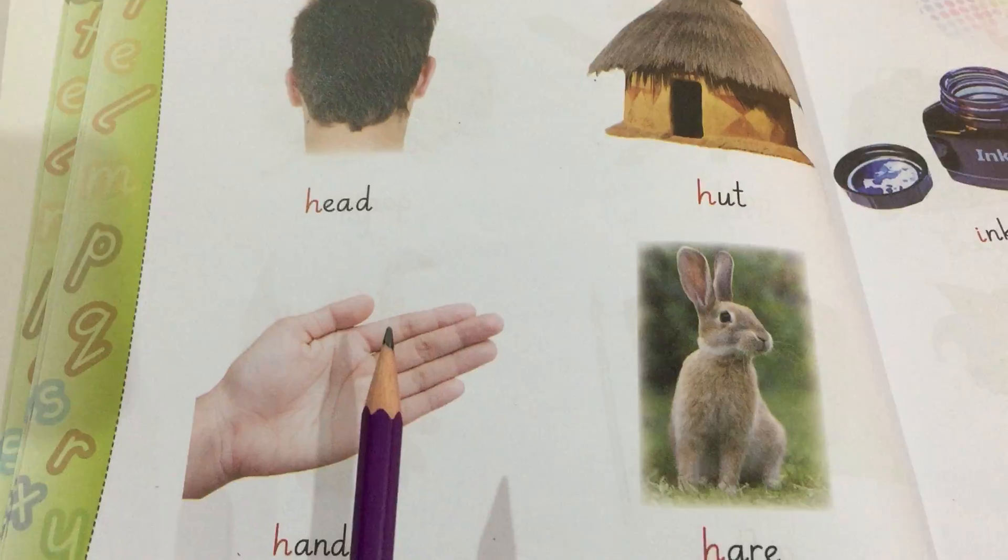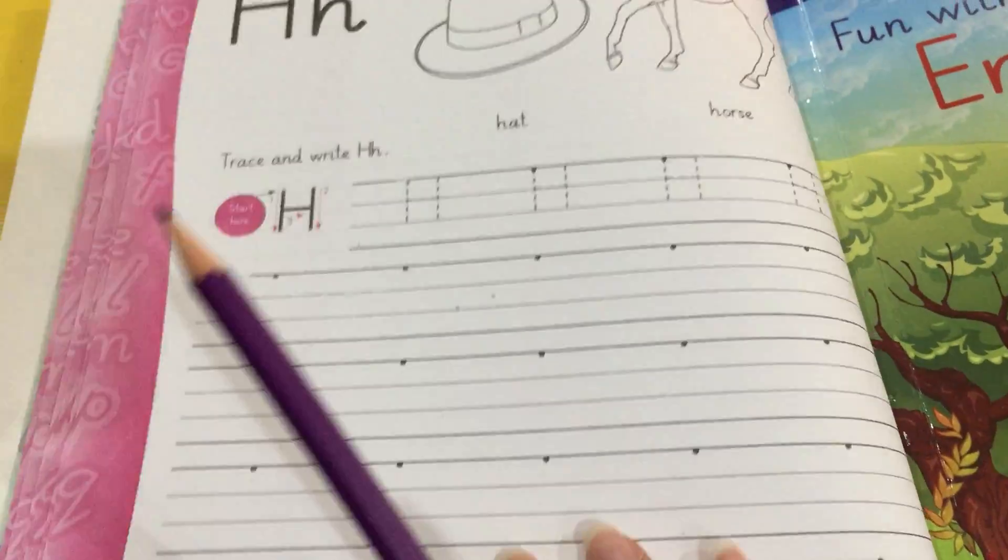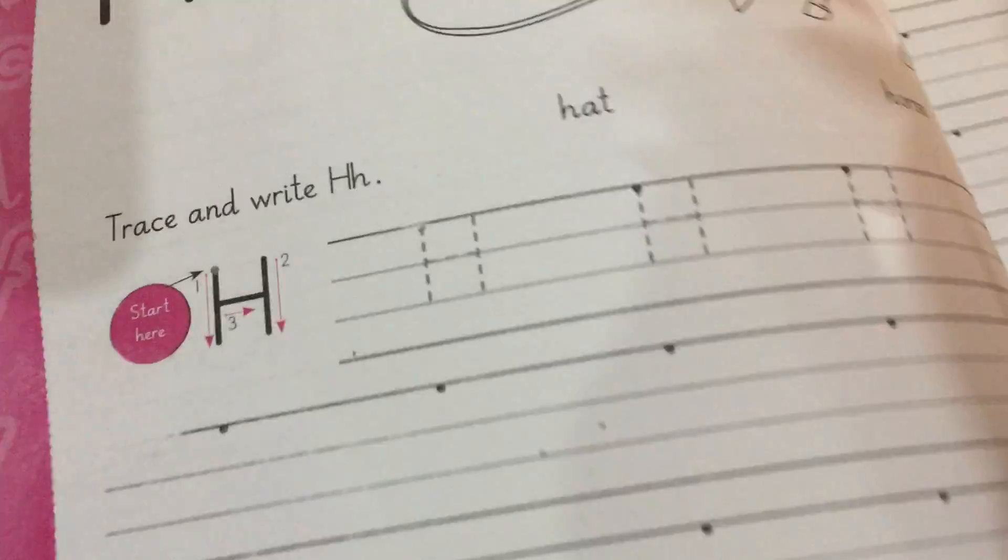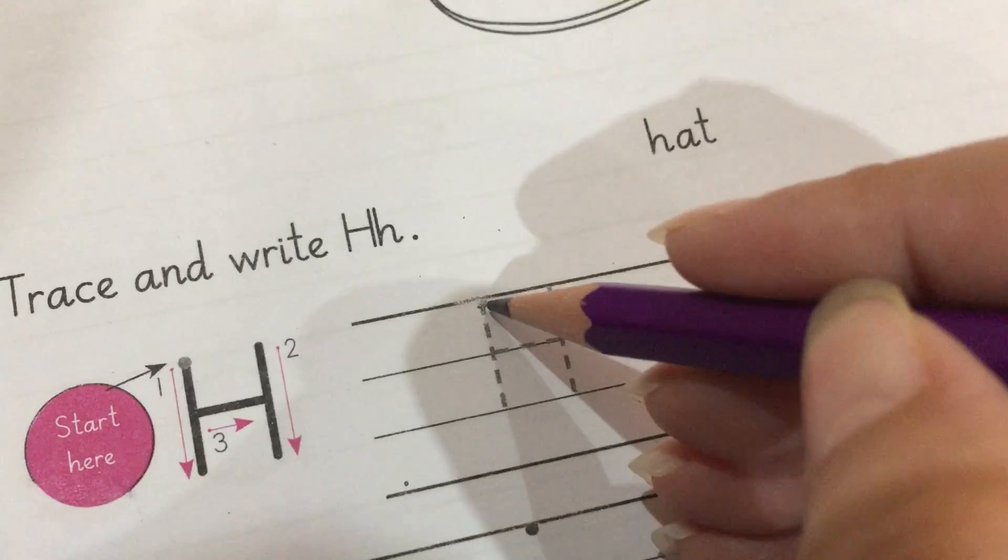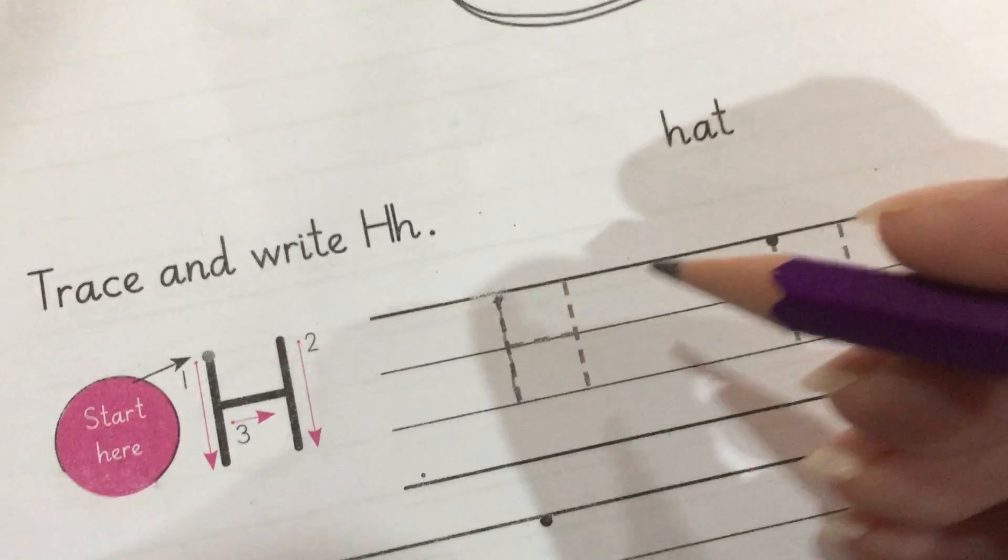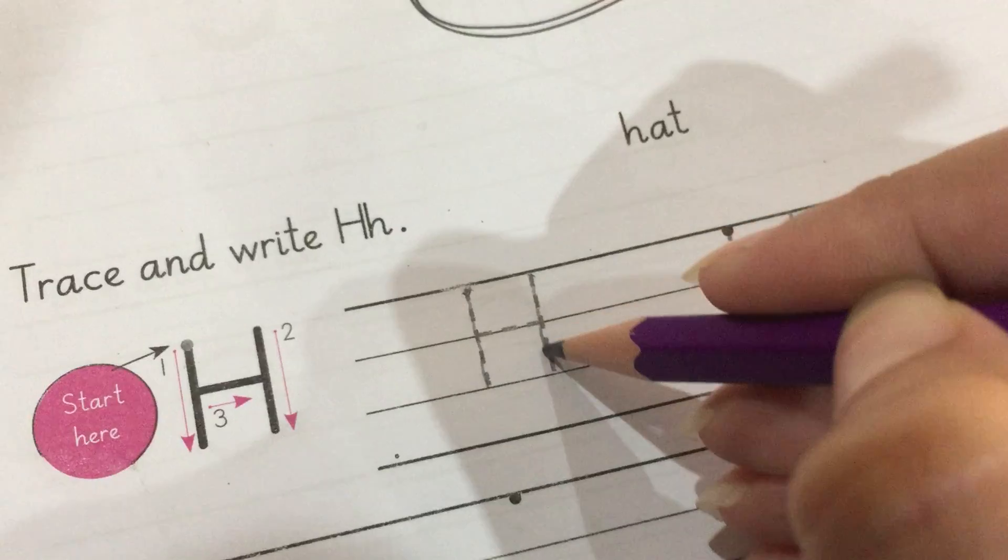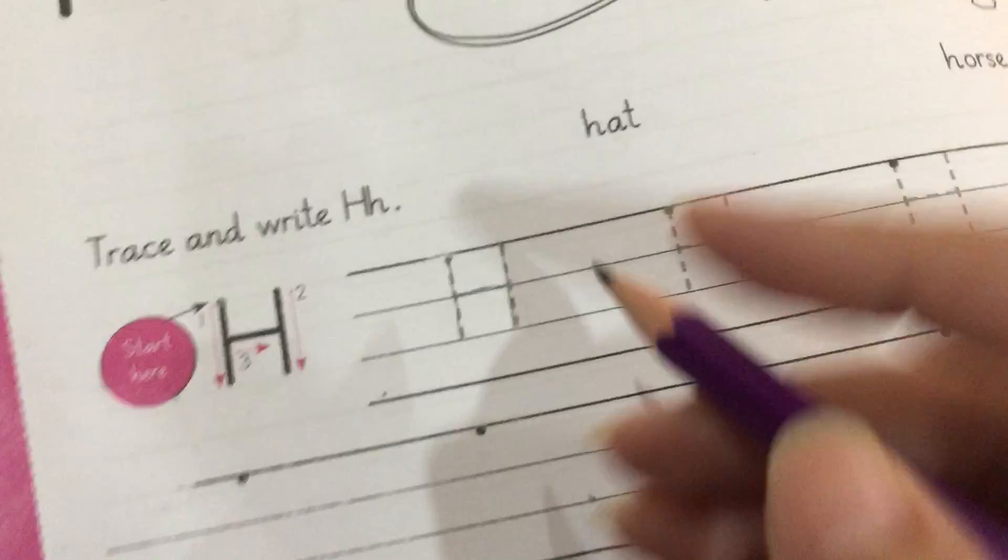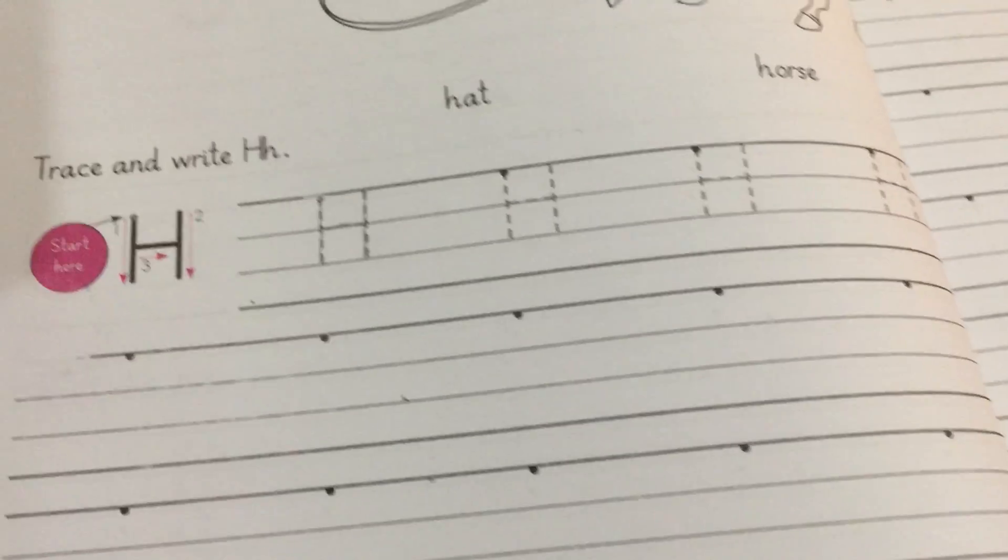Now open your English workbook. How to write H. Draw a straight line from top to bottom. Again draw a straight line from top to bottom and draw a small line in the middle. What we write? Capital H.